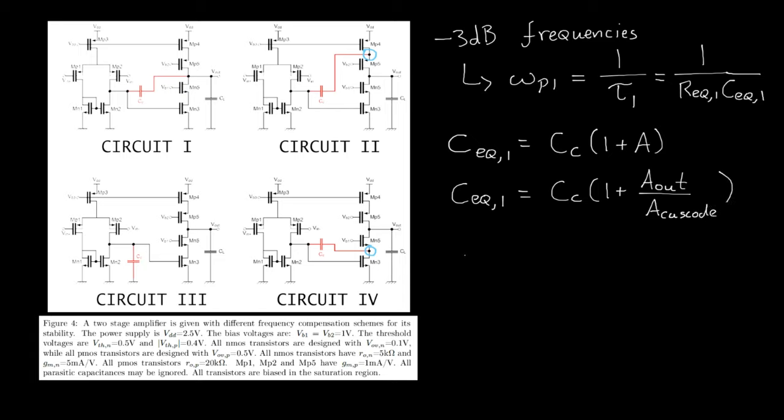The intrinsic gain of these cascodes can be computed as follows. For P5, that is the same as gm_P5 times its internal output resistance. That is 1 mA per volt times 20 kilo-ohms. So we will see an intrinsic gain of 20.